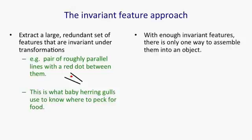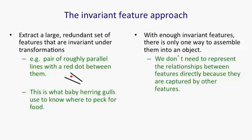With enough invariant features, there's only one way to assemble them into an object or an image. You don't actually need to represent the relationships between features directly, because those relationships are captured by other features. This has been pointed out for strings of letters by psychologist Wayne Wickelgren and in vision by Shimon Ullman. It's a sort of cute point that all we need is a big bag of features, because with overlapping and redundant features, one feature will tell you how two other features are related.